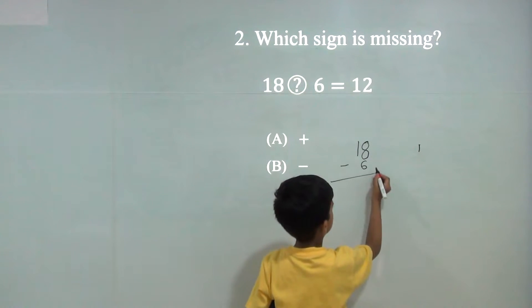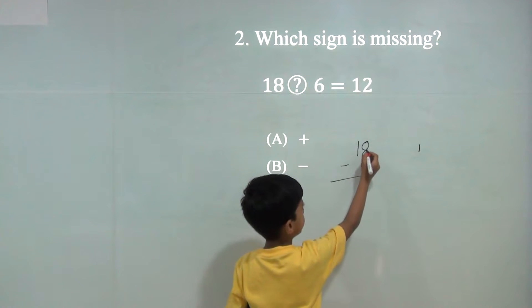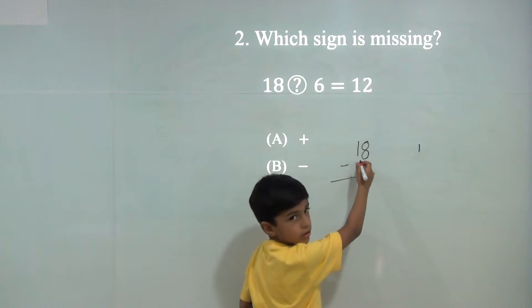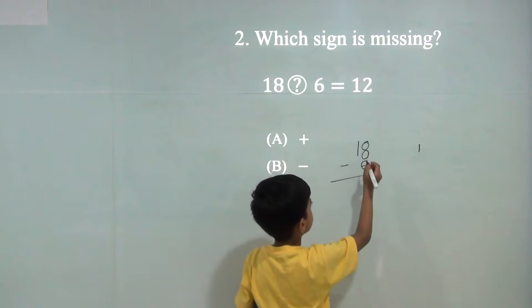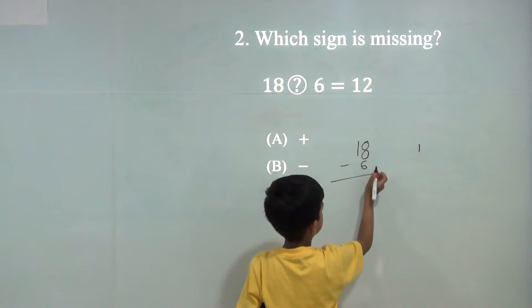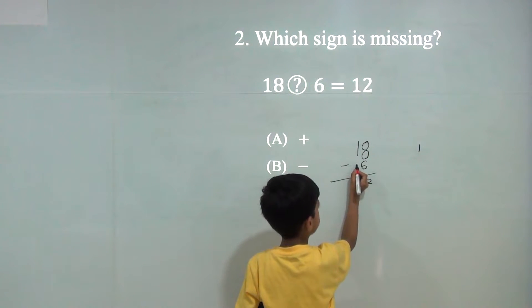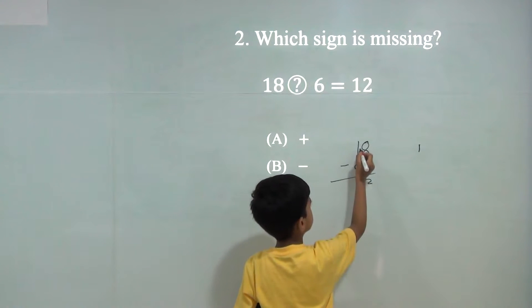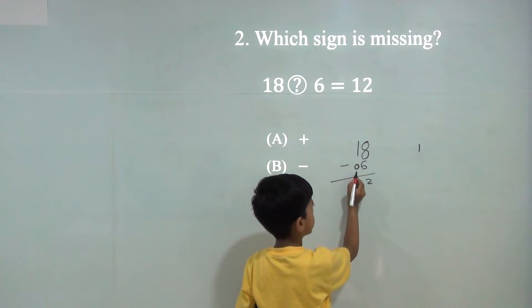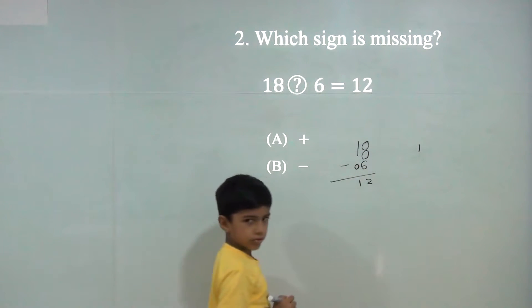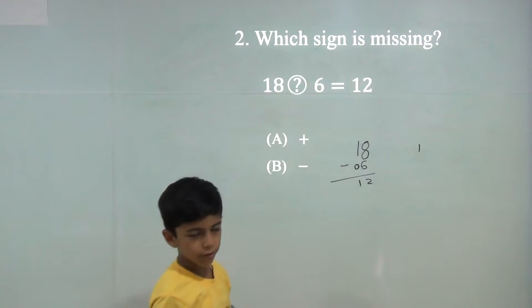So first we will minus: 8 minus 6 is 2. We can keep here 0. So 1 minus 0 is 1. So the answer would be 12.